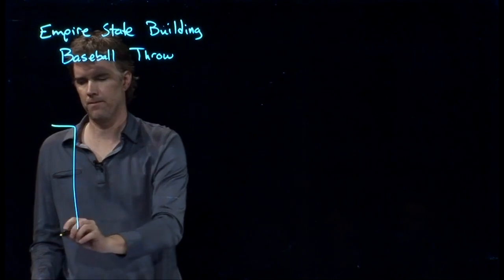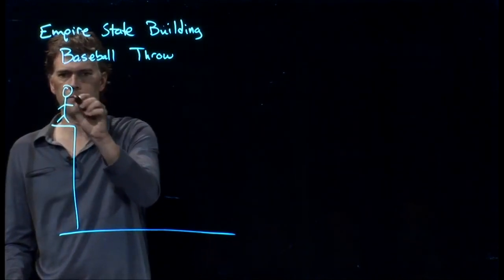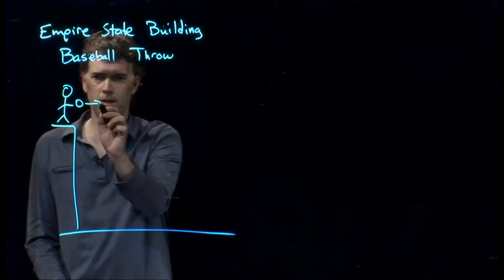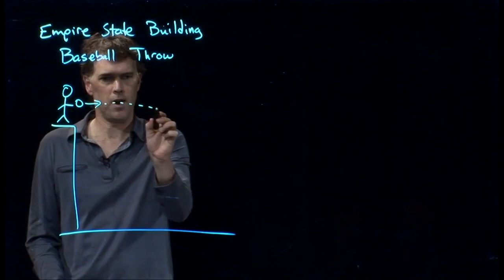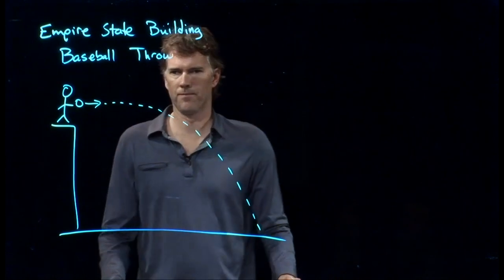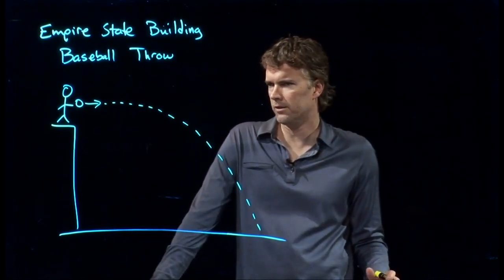Okay, so let's draw the picture here. Here we are standing on top of the Empire State Building. We've got a baseball. We're going to launch it horizontally, and now it, of course, follows this parabolic trajectory, and eventually it's going to hit the ground. And let's ask the question, how far does it go?